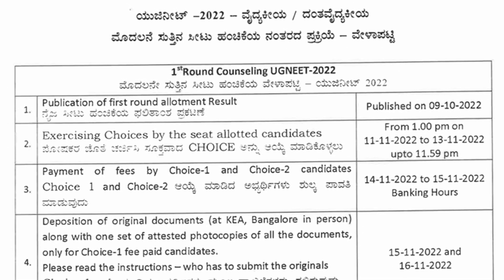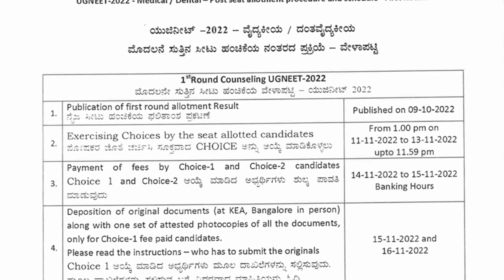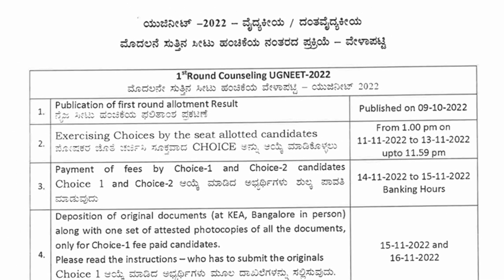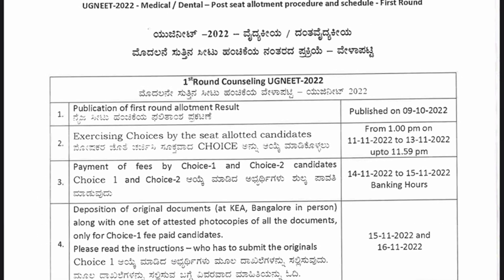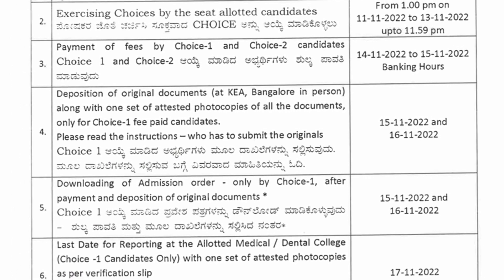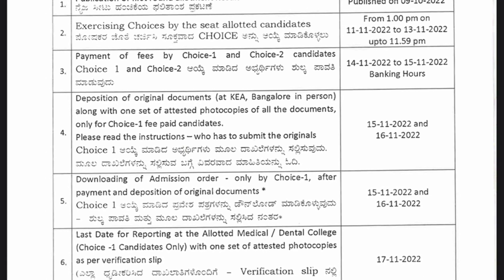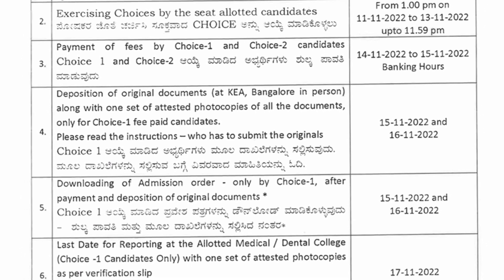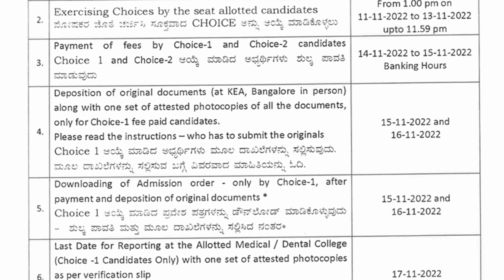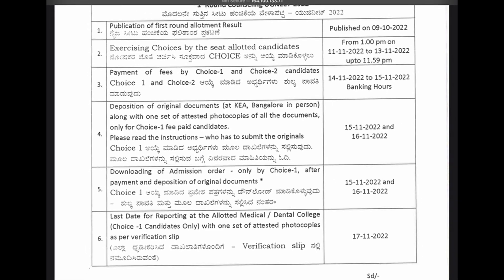Choice number one fee-paid candidates can deposit their original documents along with one set of attested photocopies of all documents at KEA Bengaluru in person. The last date for deposition of original documents is November 16th. Once you deposit your documents at KEA Bengaluru, you have to download your admission order — this is applicable only for choice number one candidates, and the last date for downloading the admission order is also November 16th. The last date for reporting at allotted colleges is November 17th. This is important information for seat allotted candidates.